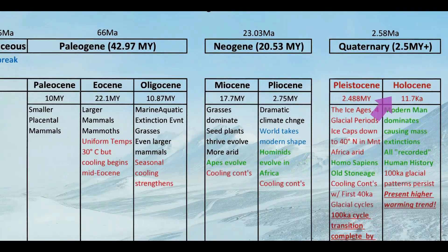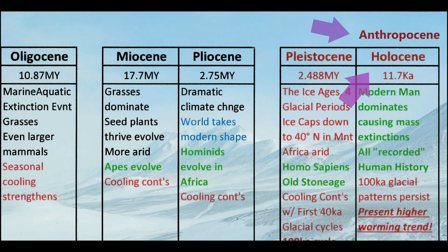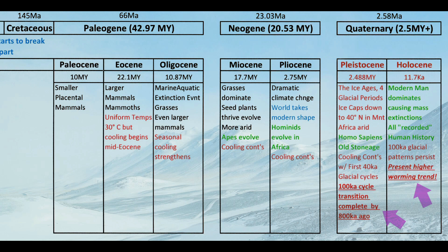The Holocene is our current epoch, started about 11,700 years ago. This is modern man's epoch — we dominate, we cause mass extinctions. All of recorded human history occurs during the Holocene. It has even been proposed recently to change the name from the Holocene to the Anthropocene. We're going to spend quite a bit of time now looking at these 100,000-year glacial cycles to try to explain why we are seeing present higher warming trends today.